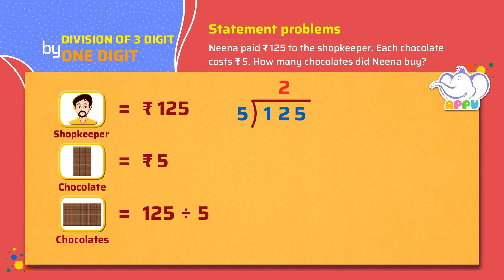Step 2: We multiply 5 and 2, we get 10. Step 3: We subtract 10 from 12, we get 2. Next, we bring down the number in one's place which is 5. So the number now becomes 25.